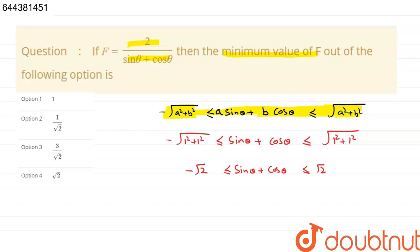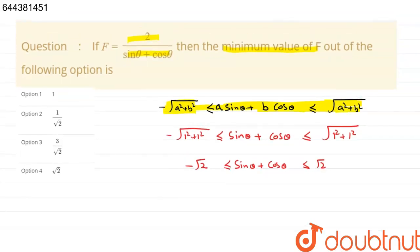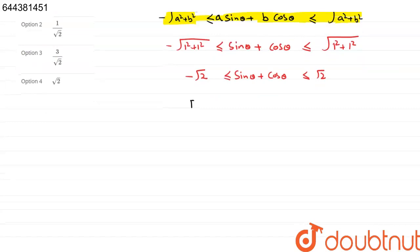Now we have to find the minimum value of f. So f is given, f is equal to 2 upon sin theta plus cos theta. We have to find the minimum value of f.